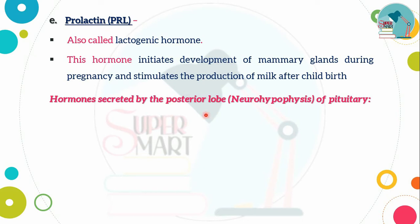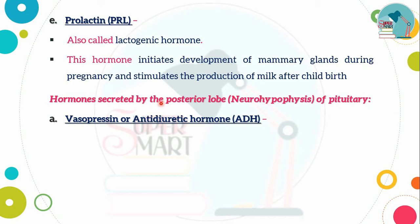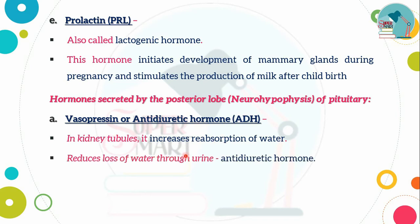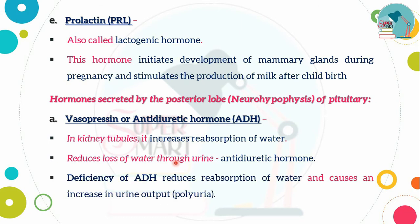The posterior lobe secretes two hormones. First is vasopressin, also called anti-diuretic hormone (ADH). In the kidney tubules, it increases water reabsorption, which reduces urine output. This is why it is called anti-diuretic hormone — it increases water reabsorption and decreases urine output.